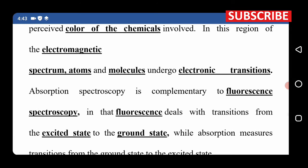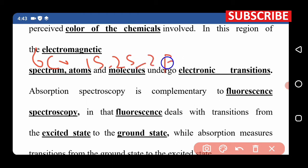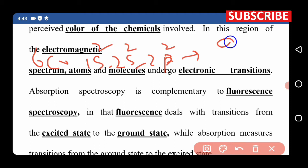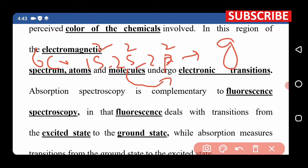Carbon has atomic number 6. Its ground state electronic configuration is 1s2 2s2 2p2. This is the ground state. From the ground state, carbon goes into the transition state — the excited state. In the excited state, the 2s1 electron excites into the 2p subshell. So you get 1s2 2s1 2p3 in the excited state.